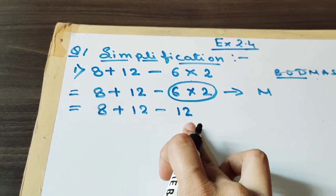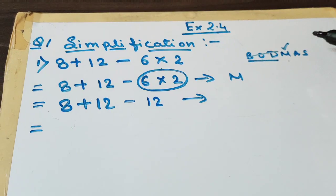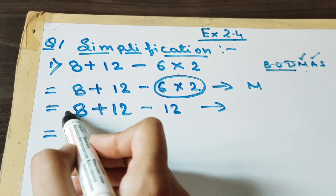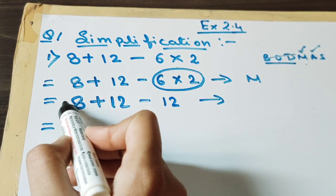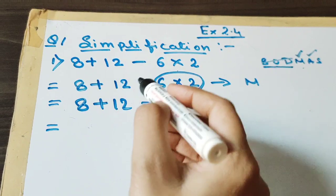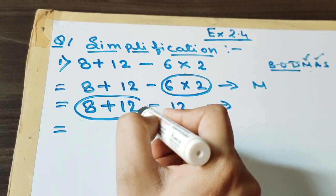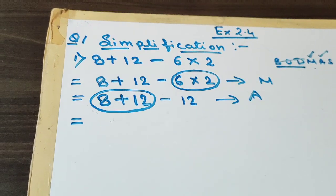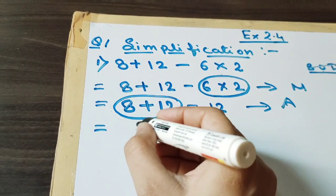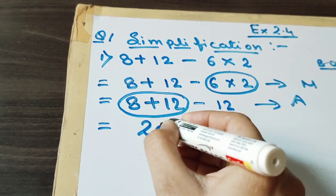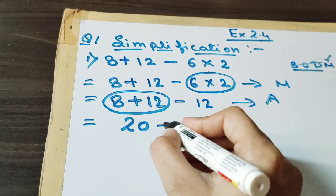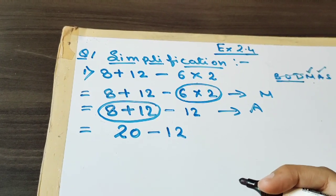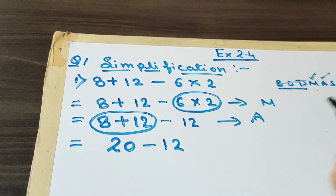Now the next step is addition. See here — this is a positive sign, and if there is no sign, as I have already told you, it means it's a positive sign. So both are positive and we will add them. Next step is addition: 8 plus 12 is 20. Then we will write down minus 12, copying it as it is.